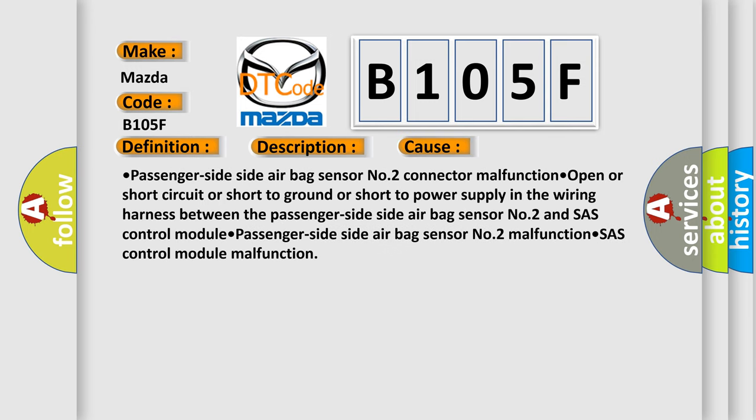This diagnostic error occurs most often in these cases: Passenger side side airbag sensor number two connector malfunction, open or short circuit or short to ground or short to power supply in the wiring harness between the passenger side side airbag sensor number two and SAS control module, passenger side side airbag sensor number two malfunction, SAS control module malfunction.